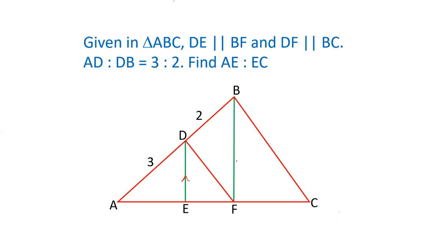And it is given that AD and DB are in the ratio of 3 to 2 and we have to find out the ratio of AE is to EC. Now, let's see how we can solve this question.